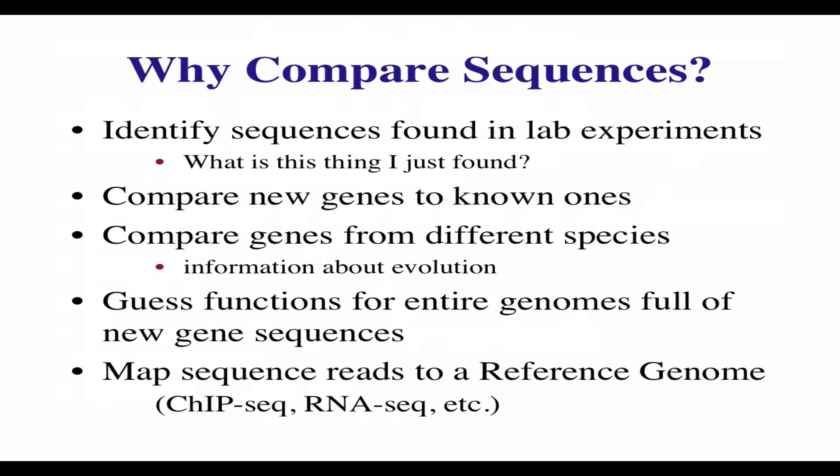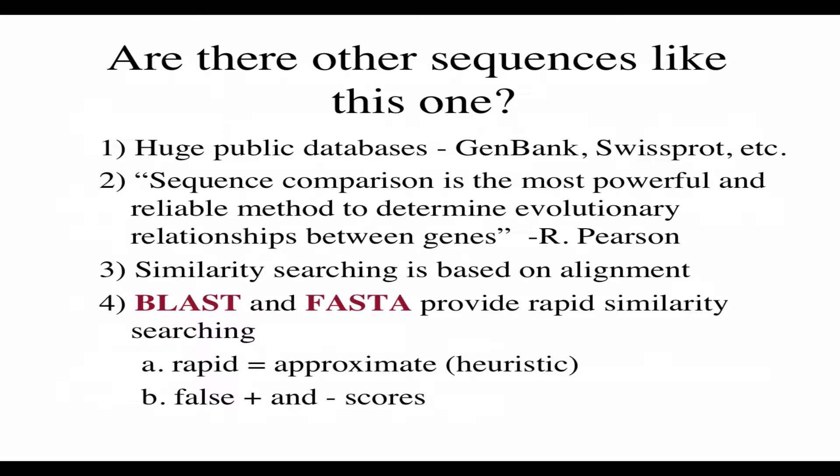Sequence alignments are also used to make sense of next-gen sequencing, to map individual sequence reads to a known genome to look for things like mutations, DNA-protein interactions, or a whole bunch of other things. Sequence alignment is a very fundamental concept used throughout genomics and molecular biology.